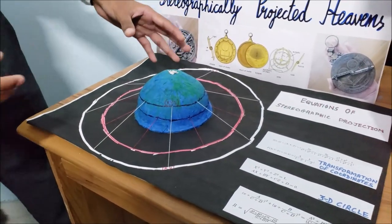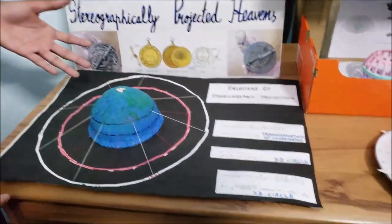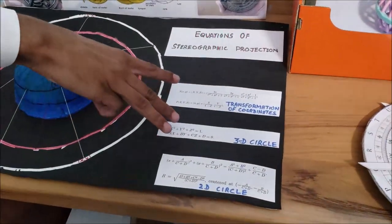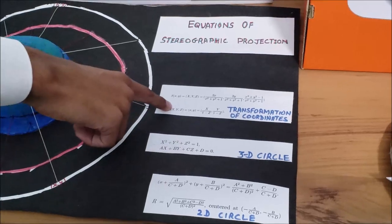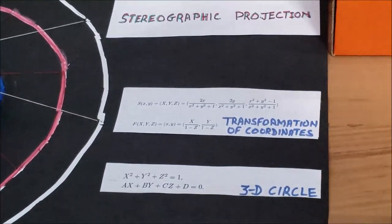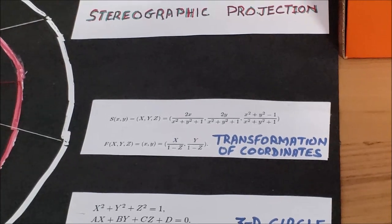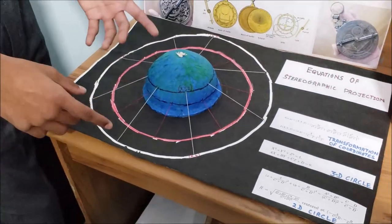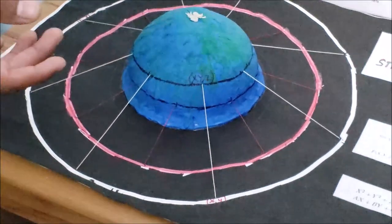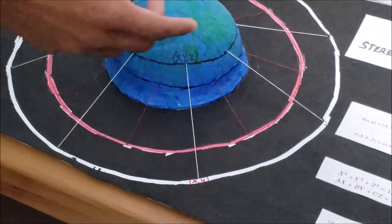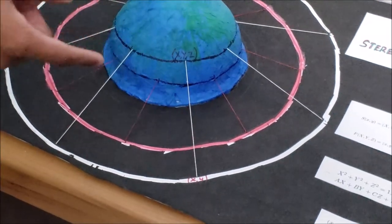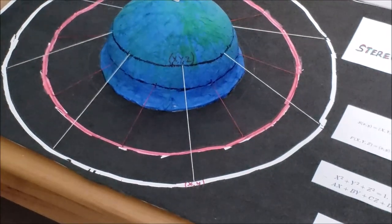Now to understand the mathematical principles that govern this transformation take a look at these three sets of equations right over here. The first set of equations talks about the transformation of coordinates. That is if you know the coordinates of the projected circle any point of the projected circle, you can then find out the points of the three-dimensional small circle of the hemisphere. And you can do the same vice versa.